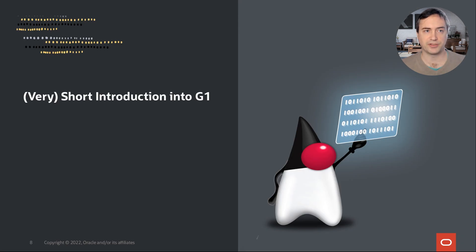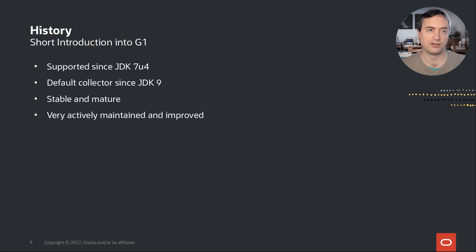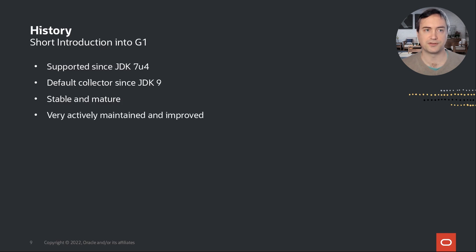Since in the remaining presentation I will be looking mostly at G1, here's a short introduction. G1 has been supported in OpenJDK since 2004. It is the default collector since JDK 9 due to its versatility. At this point, it's very stable and mature. As such, we at Oracle very actively maintain and improve it every JDK release, finding new opportunities for optimization every release, as you will see.